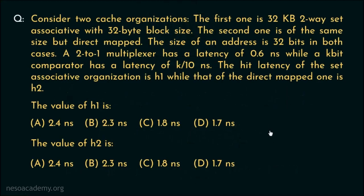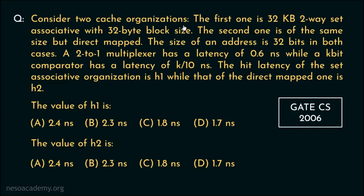Consider this question — it came in the GATE Computer Science 2006 paper. Consider two cache organizations. The first one is 32 KB two-way set associative with a 32-byte block size. The second one is of the same size — 32 KB — but it is direct mapped, so the mapping procedure is different.